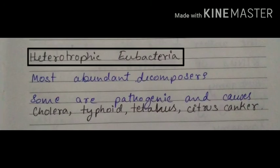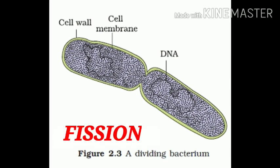Finally, let's come to heterotrophic eubacteria. These are the most abundant decomposers of the world. Some of them may be pathogenic and cause diseases like cholera, typhoid, tetanus, and citrus canker.